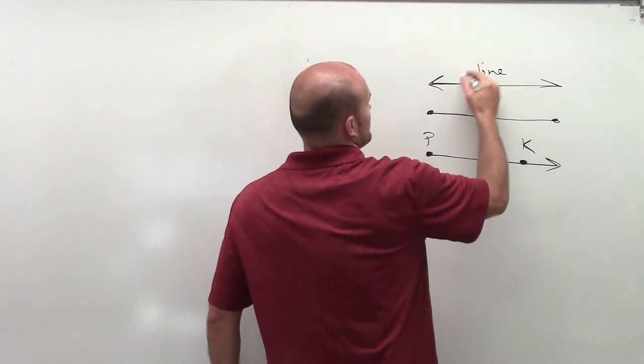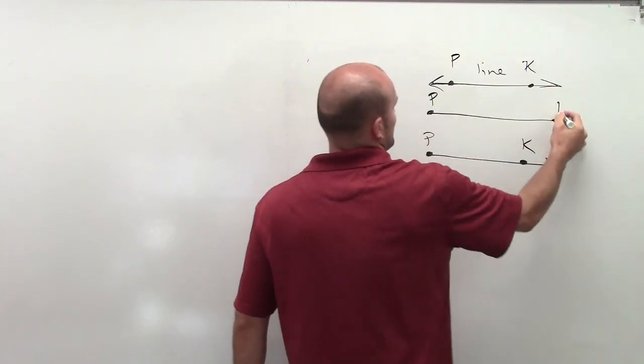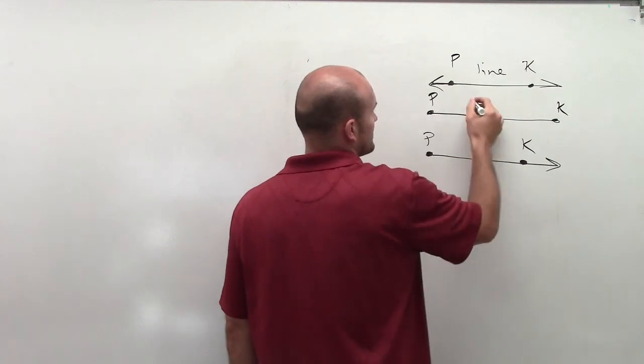So this is a line, and it still can be your two points, P K. This is a segment.